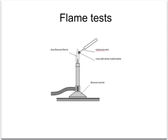There's a Bunsen flame, and you'd use a blue flame for this so that the color of the yellow flame wouldn't mask the color of the alkali metal flame.